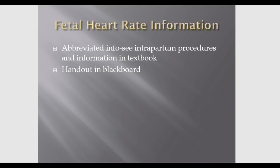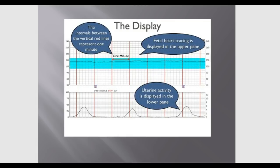Now I'll go over some fetal heart rate information — this is abbreviated; more detail is in your textbook for intrapartum procedures. There is also a handout on Blackboard correlating to this lecture. On the fetal monitoring strip, the top portion shows the fetal heart rate response and the bottom shows uterine activity. The intervals between red lines represent one minute, and each small box within equals ten seconds.